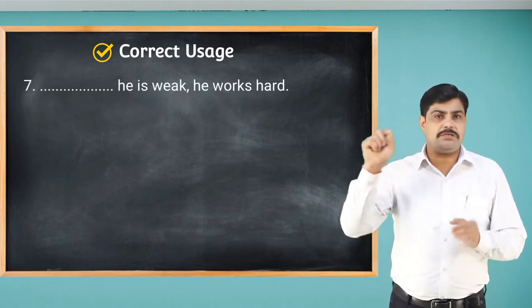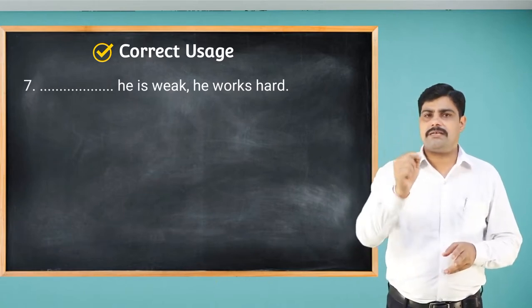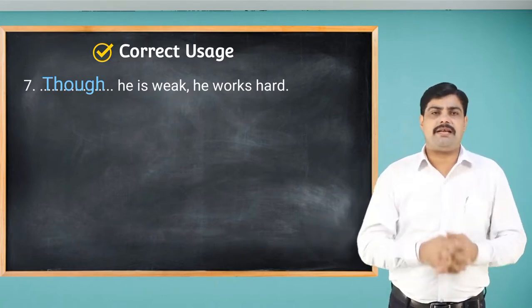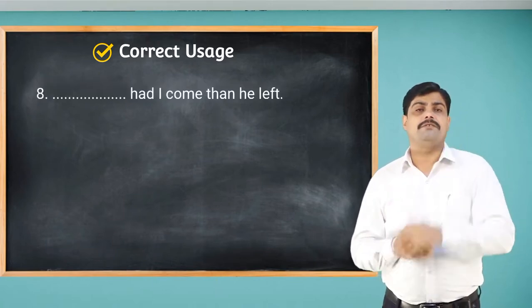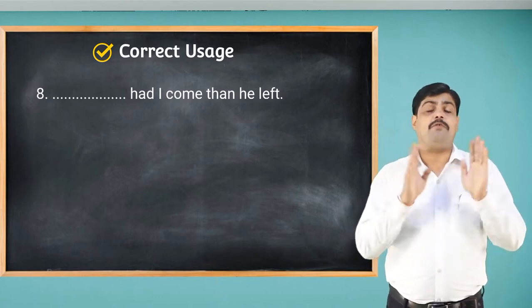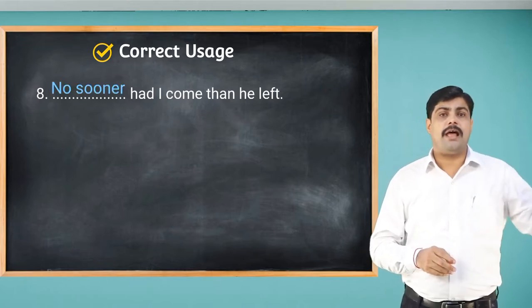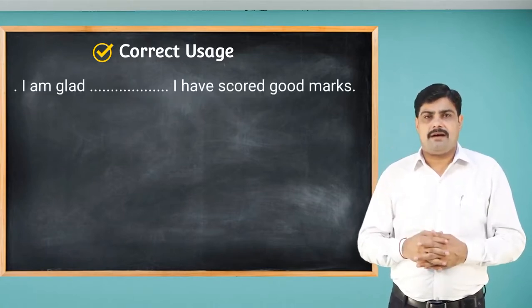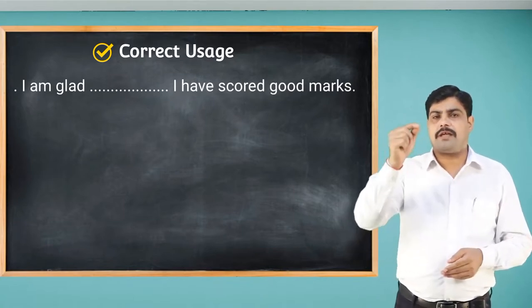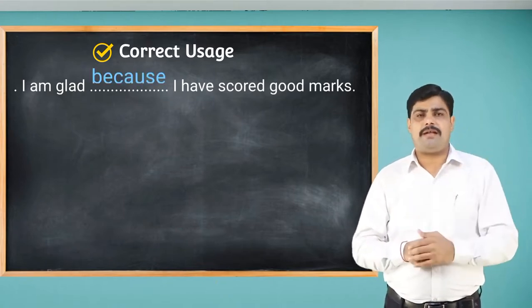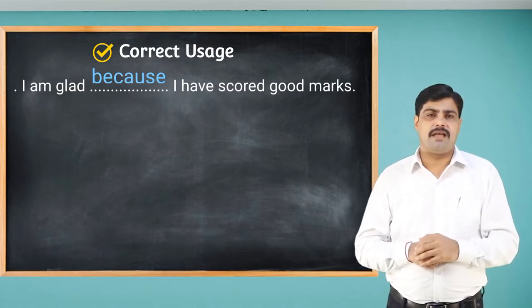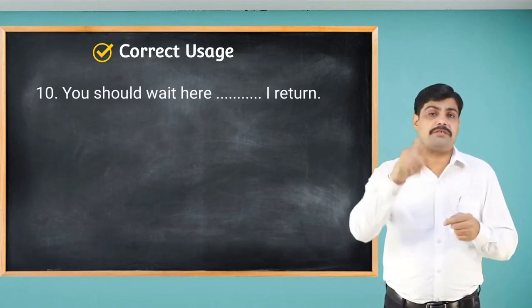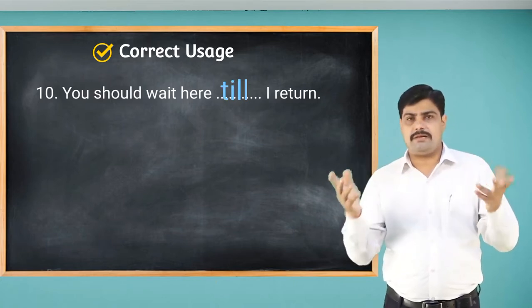'___ he is weak, he works hard' — contrast, so use 'though': 'Though he is weak, he works hard.' '___ had I come then he left' — 'then' is used, so we need 'no sooner': 'No sooner had I come than he left.' 'I am glad ___ I have scored good marks' — result, so use 'because': 'I am glad because I have scored good marks.' 'You should wait here ___ I return' — time, so use 'till': 'You should wait here till I return.'